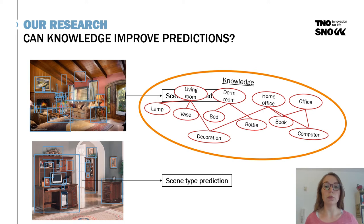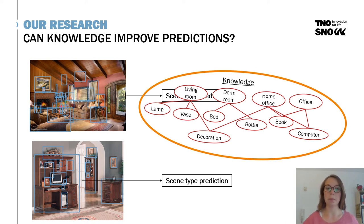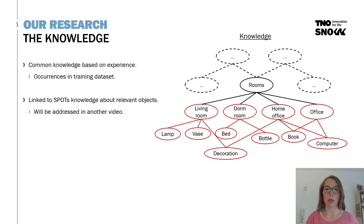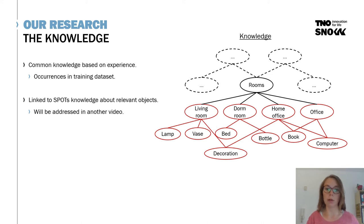But where do we get this knowledge from? You don't want to write the knowledge manually every time you encounter a new room. We use common knowledge based on experience and common knowledge available. We have a large knowledge tree available on the internet or in the internal knowledge of Spot. Based on the question asked — for example, 'in which room am I?' — it will look at all available knowledge and extract the parts needed for room classification, selecting the subsection relevant for our predictions.